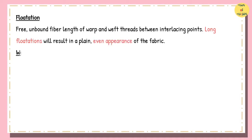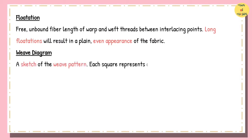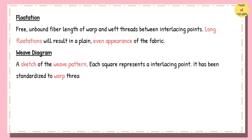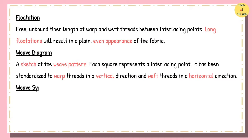Weave Diagram. The weave diagram is a graphical sketch of the weave pattern on graph paper. Each square represents a potential interlacing point of warp and weft threads. It has been standardized to represent the warp threads in a vertical direction and the weft threads in a horizontal direction.